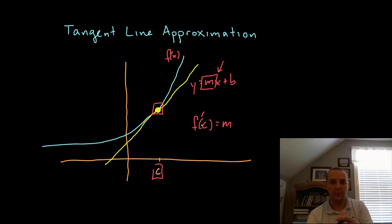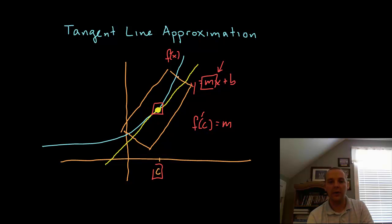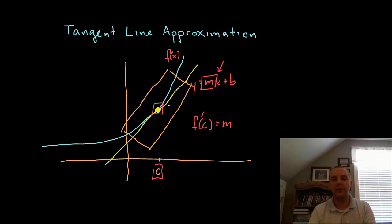So the slopes agree and the y values agree at this point of tangency. Now one thing we can use tangent lines to do is approximate a function — an uglier function — at points around c. You'll notice, granted there is some error, but basically the tangent line follows the function, so wherever the function goes the tangent line is close behind it.